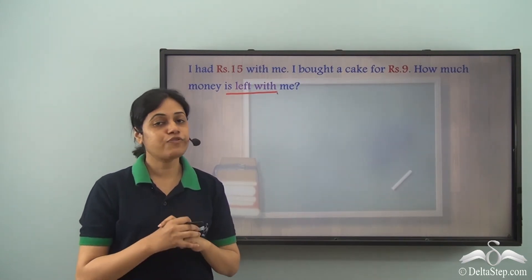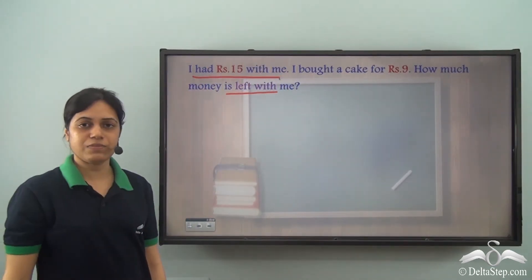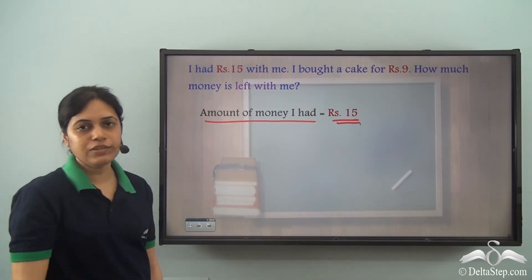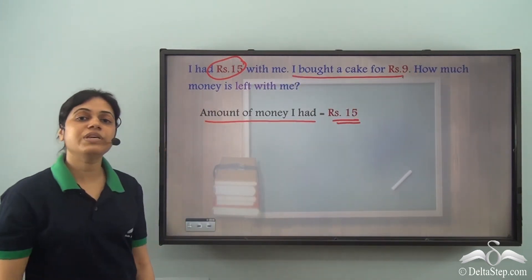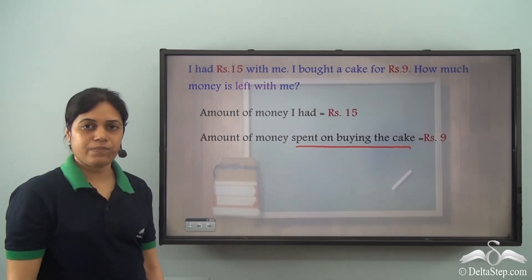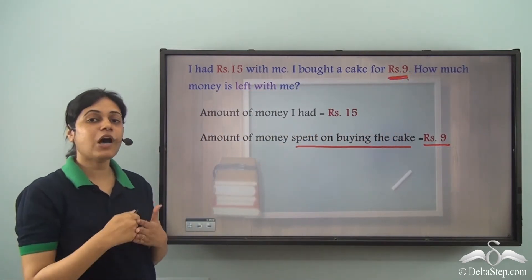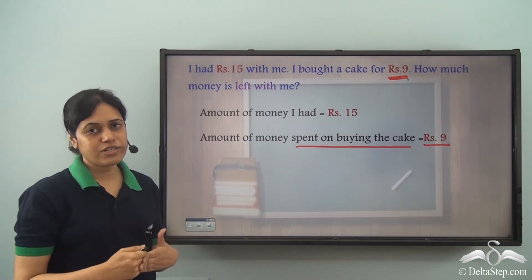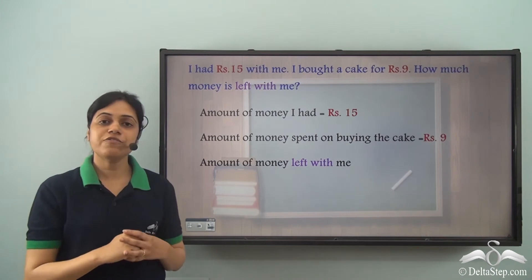So, can you help me solve this? First we need to write what is given in the word problem. What is given? I had rupees 15 with me — so, the amount of money I had is equal to rupees 15. Next, what is given? I bought a cake for rupees 9 — so, the amount of money spent on buying the cake is rupees 9. Now, I need to write what is to be found or what is asked: the amount of money left with me.